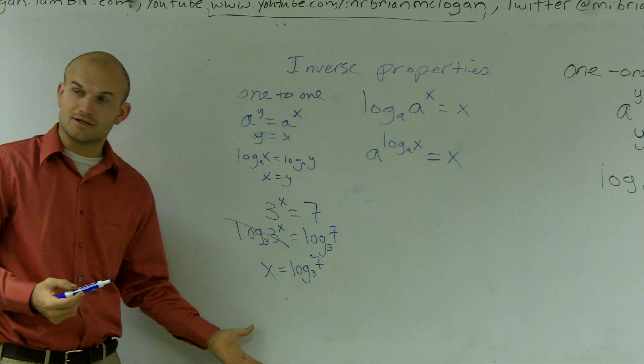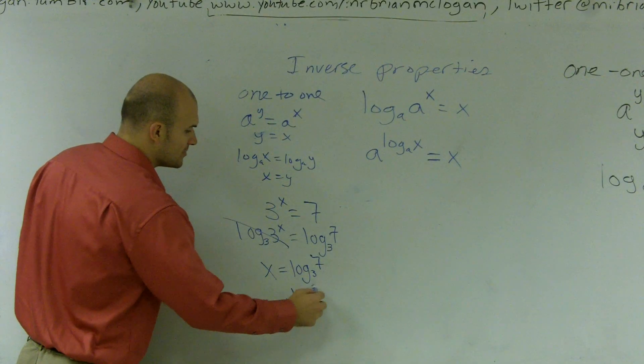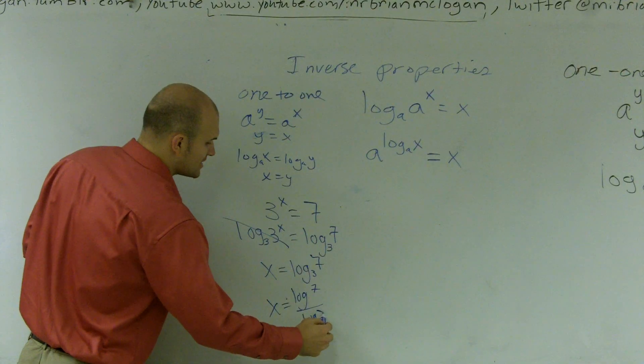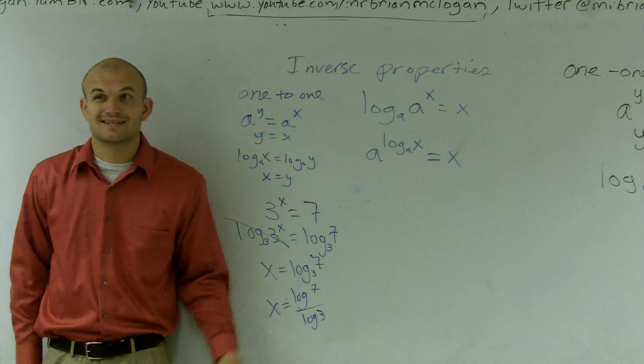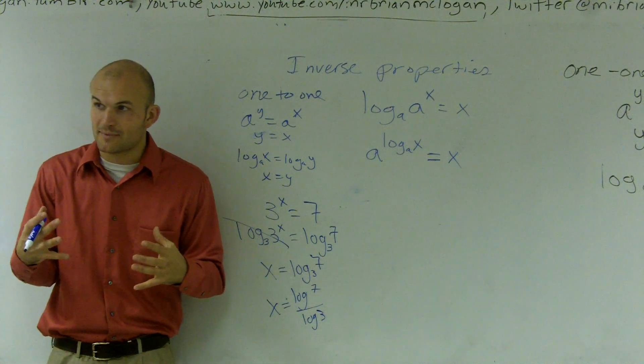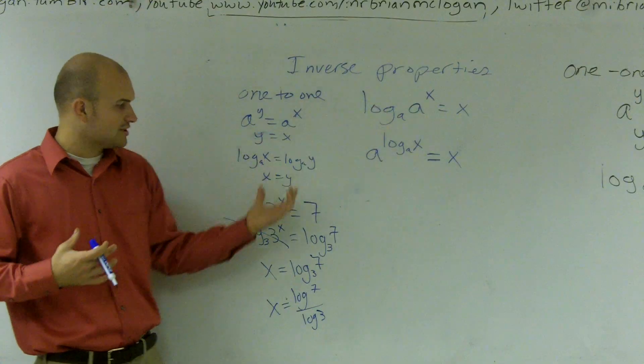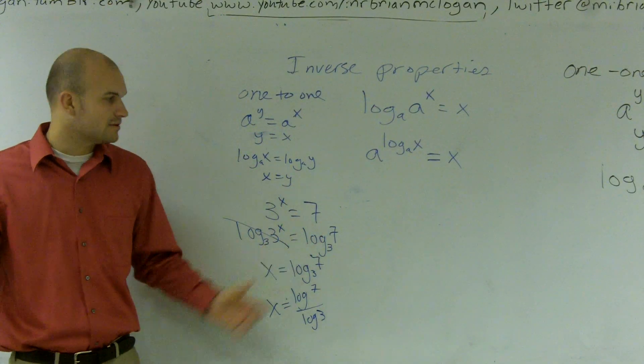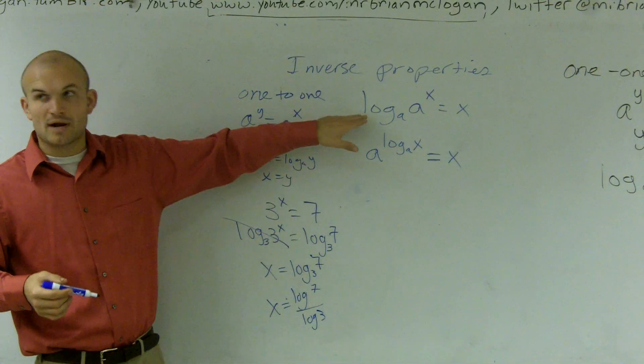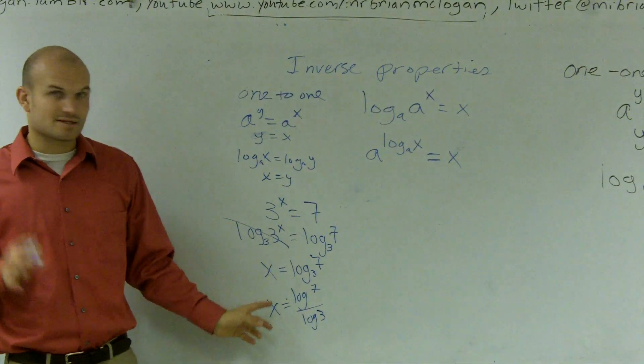Where now by using your calculator, you can use the change of base formula, so you get log of 7 over log of 3. Does anybody have any questions on how I did that? So what I did is I combined with the one-to-one property, you can take the log of both sides, right? And then you just use your inverse property up here to evaluate this.